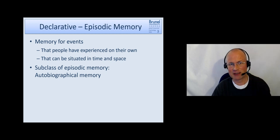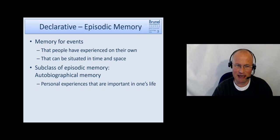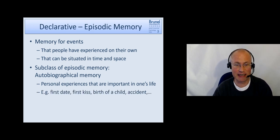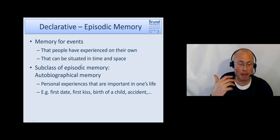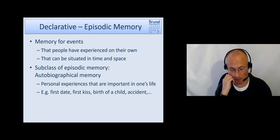A subclass of these episodic memories is autobiographical memory, and these are the personal experiences that are really important in our life. Examples are the first date, first kiss, the birth of a child, marriage, the wedding, having had an accident or things like that. While episodic memory is about everything, also including the boring things like what you had for breakfast yesterday morning and things like that.